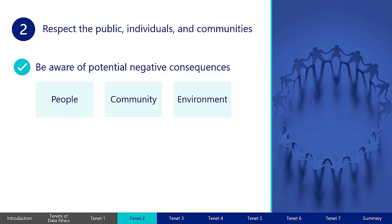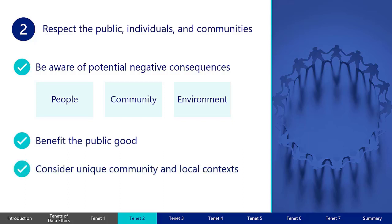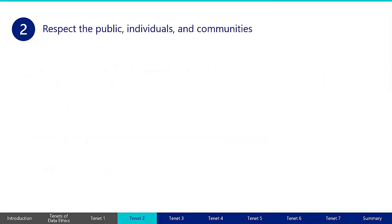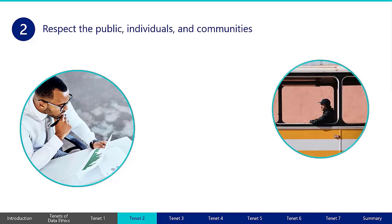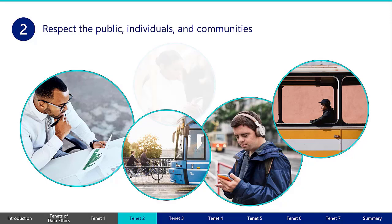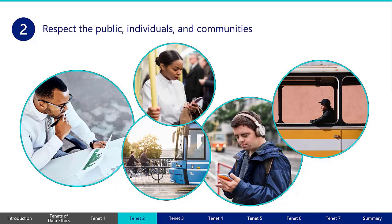Data activities should have the overarching goal of benefiting the public good, and responsible use of data begins with careful consideration of its potential impacts. Data initiatives should include considerations for unique community and local contexts, and have an identified and clear benefit to society. For example, if you're a data scientist tasked with proposing improvements to the public transportation system in a big city, you might discover that bus routes serving low-income neighborhoods are less frequent and less reliable compared to those serving wealthier areas. Remembering data ethics, you would meet with your supervisor, present your findings, and propose solutions to make the transportation system more equitable for everyone.